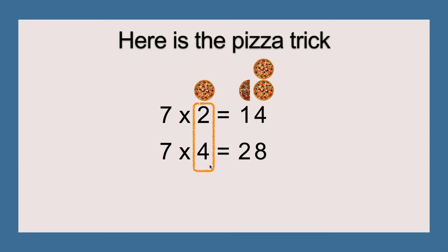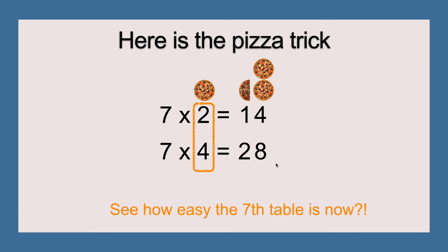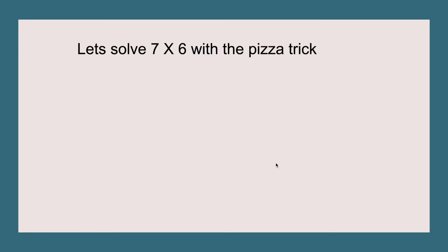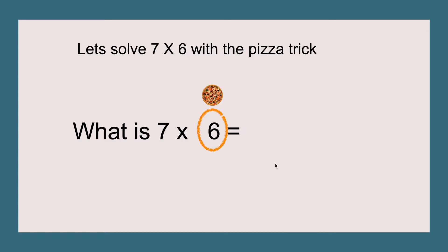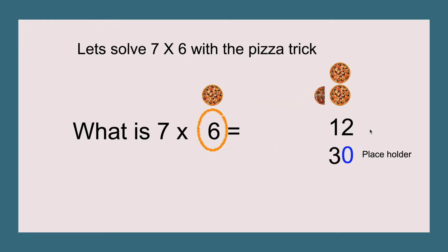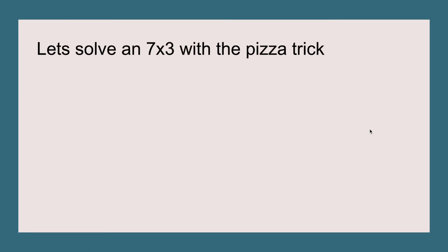Now let's solve seven times six with the pizza trick. Circle the six, put the full pizza above it, and six times two equals twelve. We add a placeholder zero because twelve has more than one digit. Six divided by two equals three, and placing that in front of the placeholder zero gives us thirty. Then twelve plus thirty equals forty-two, so seven times six equals forty-two.